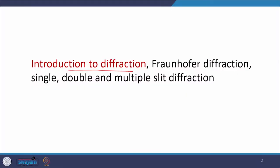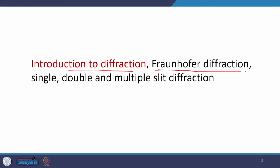Hello everyone, welcome to my class. In the last class we talked about coherence. Today we will start module 7 wherein we will talk about diffraction. In this class I will introduce diffraction to you. Diffraction is of basically two kinds: the first one is called Fraunhofer diffraction and the second is called Fresnel diffraction. We will cover Fraunhofer diffraction first, and after its introduction we will talk about single, double and multiple slit diffraction. Let us start with the introduction to diffraction today.